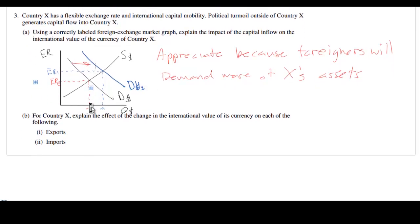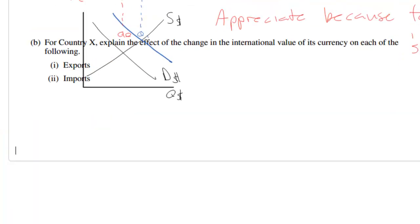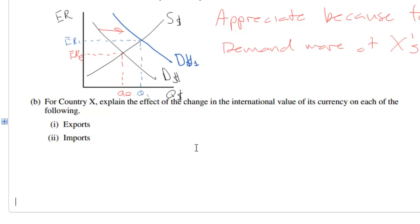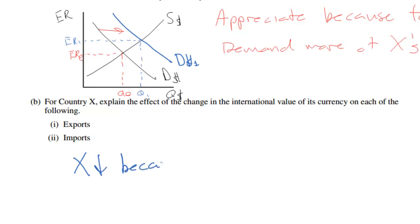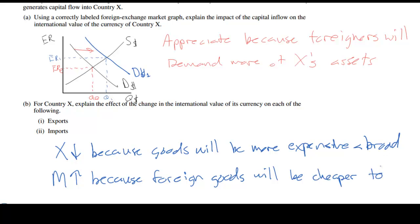This is a short FRQ with only two parts. Part B says: explain the effect of the change in the international value of the currency on exports and imports. This is straightforward relating to the current account balance. As a country's currency appreciates, we expect exports to decrease — this is a two-point question because it asks for an explanation. Exports will decrease because goods from country X will be more expensive to foreign consumers, so they'll buy fewer goods from country X. On the other hand, import spending should increase because foreign goods will become cheaper to country X's consumers.